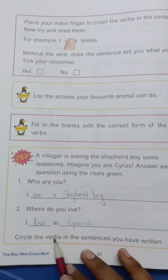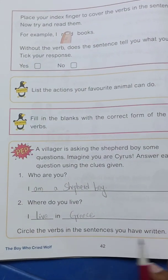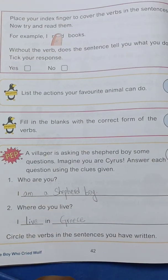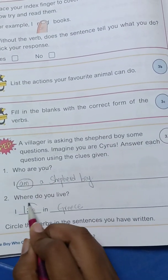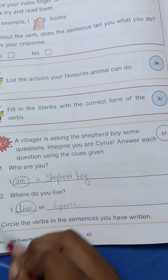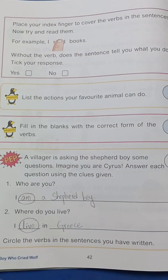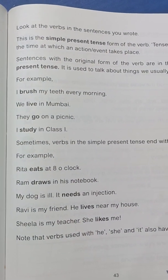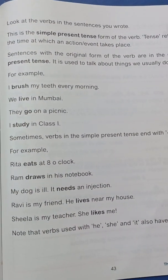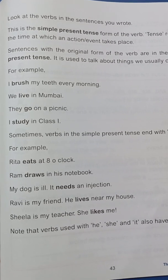Write like this. Circle the verbs in the sentences you have written. Now circle the verbs in this sentence, children — 'am' and 'live'. Come to the next page, children. Page 43. Look at the verbs in the sentence you wrote.